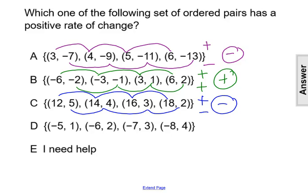For set D, the x values are negative 5 to negative 6 to negative 7 to negative 8—those are decreasing. The y values go from 1 to 2 to 3 to 4—those are increasing. Again, with that difference, that's a negative rate of change. This confirms the only set with a positive rate of change is set B.